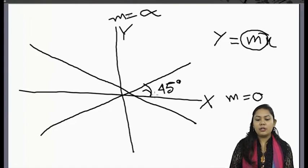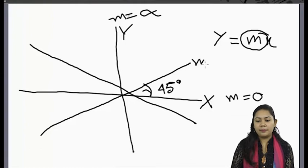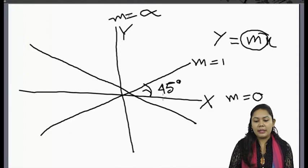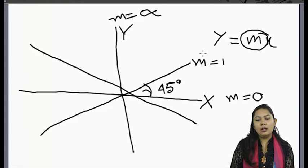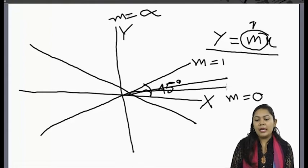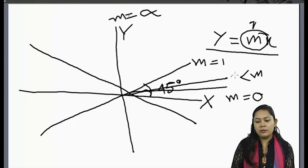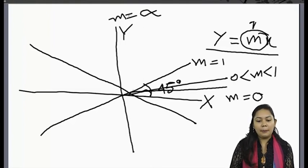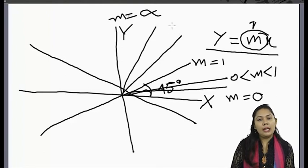Now when a line makes different angles with the X-axis, the value of m changes. When Y equals X, the value of m is 1. For lines with different angles, m values range from 0 to greater than 1.